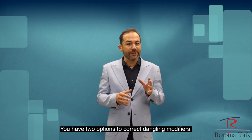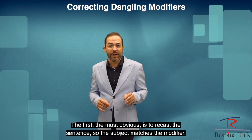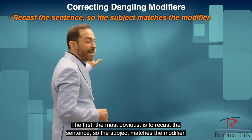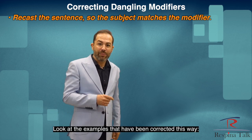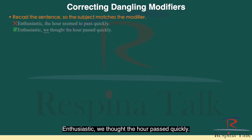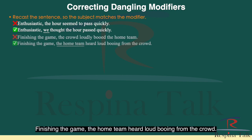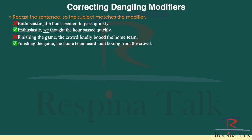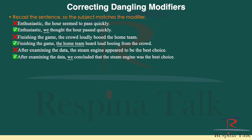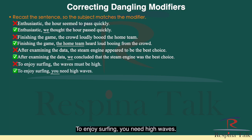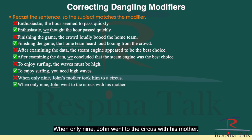You have two options to correct dangling modifiers. The first — the most obvious — is to recast the sentence so the subject matches the modifier: "Enthusiastic, we thought the hour passed quickly." "Finishing the game, the home team heard loud booing from the crowd." "After examining the data, we concluded that the steam engine was the best choice." "To enjoy surfing, you need high waves." "When only nine, John went to the circus with his mother."